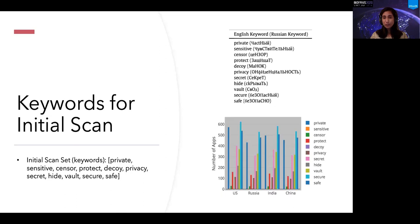As you can see from the graphical figure, we found a lot of applications using keywords like 'private' and 'secure.' But keywords such as 'secure' also yielded some secure banking applications instead of vault applications. So we had a necessity to identify vault applications in a unique way.